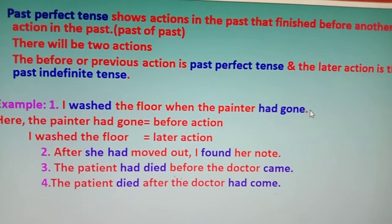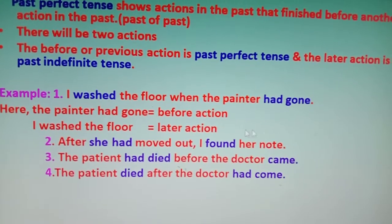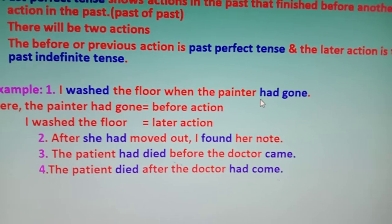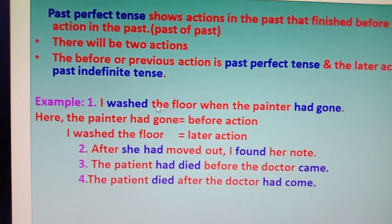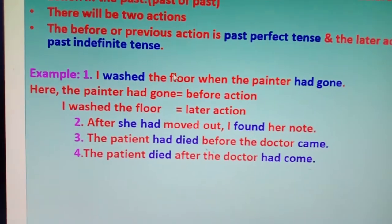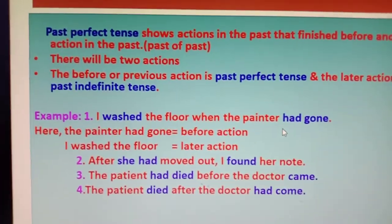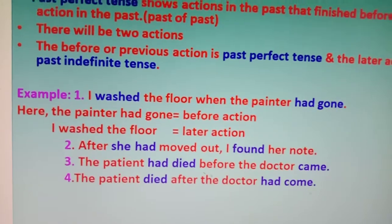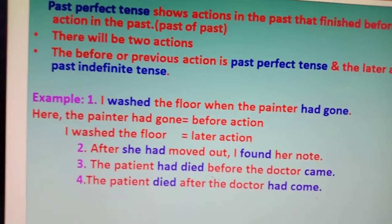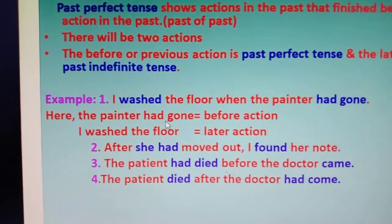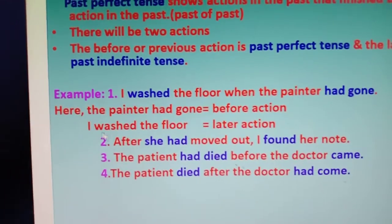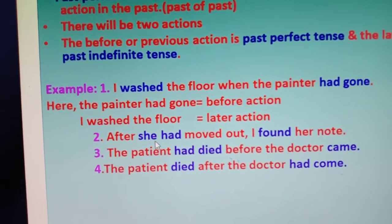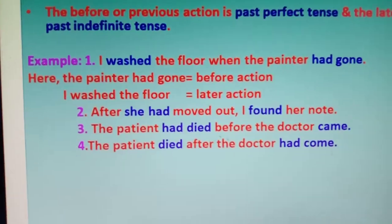The before action is 'the painter had gone,' because after the painter's departure I washed the floor. So the before action is called the Past Perfect Tense and the later action is called the Past Indefinite Tense. There will always be two actions: the before action is Past Perfect Tense and the after action is Past Indefinite Tense. 'The painter had gone' is the before action and 'I washed the floor' is the later action.